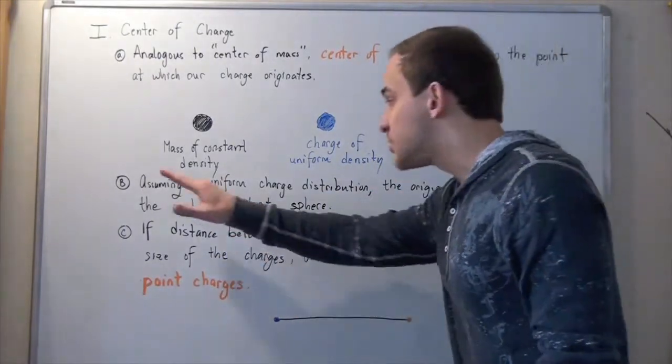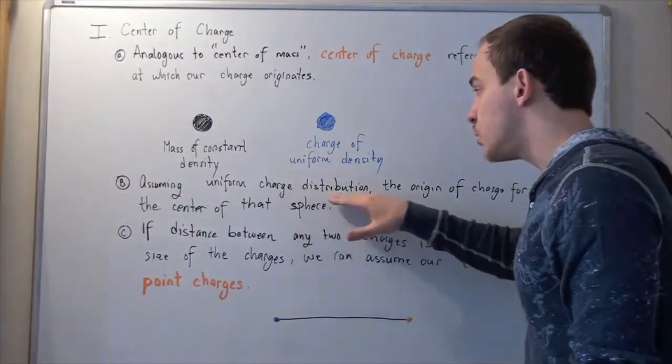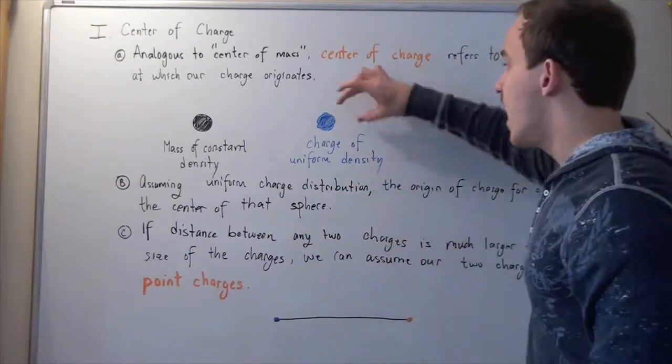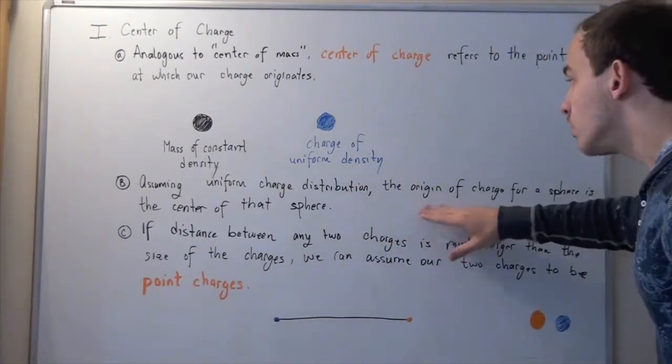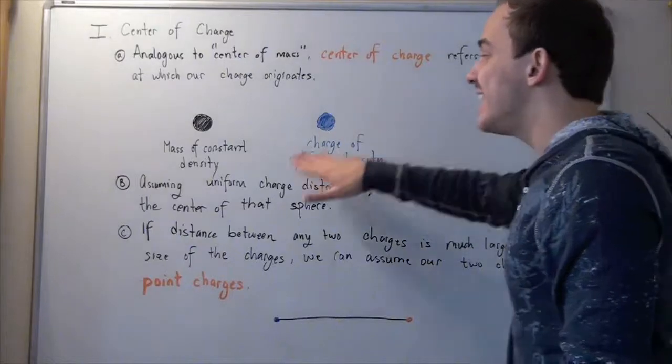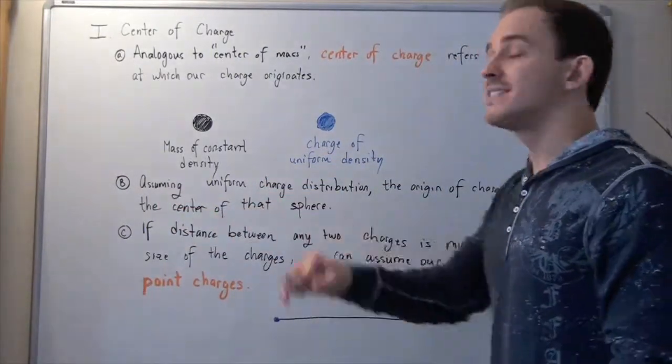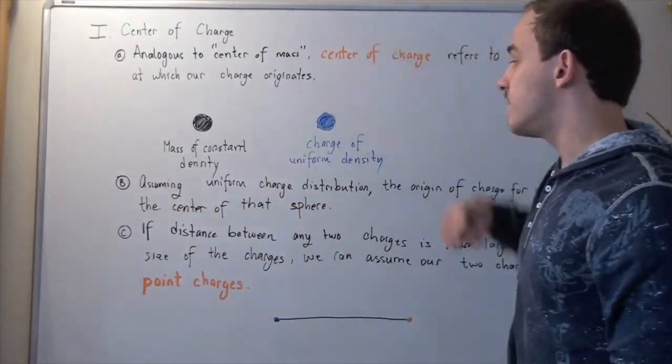So, once again, assuming uniform charge distribution, uniform charge density of our sphere, the origin of charge for our sphere is the center of that sphere. It's a point at the center of our sphere.